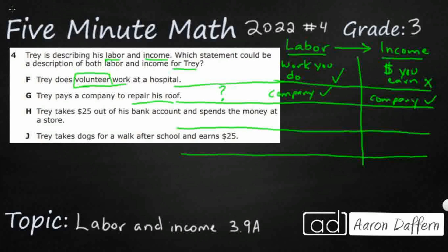Because look at the question. Which statement could be a description of both labor and income for Trey? So, that really doesn't describe Trey unless he's working for the company. But then why would he pay himself? So, this is a good example of labor and income, but not for Trey.